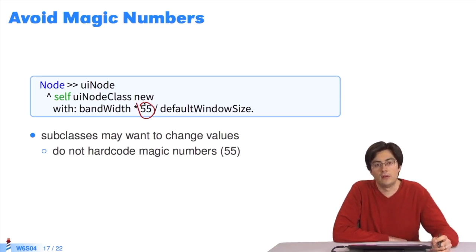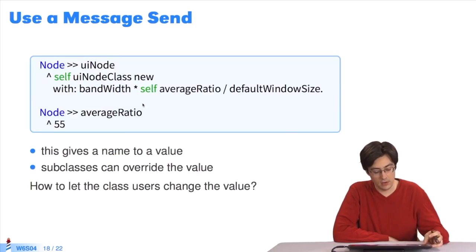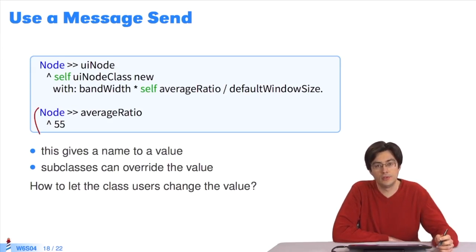Here we see that the value 55 appears in hard code in the method code. This means the subclasses cannot change to 100, for example. So we will extract this value like we did previously, and put it in a separate method so that the subclasses can change the value.